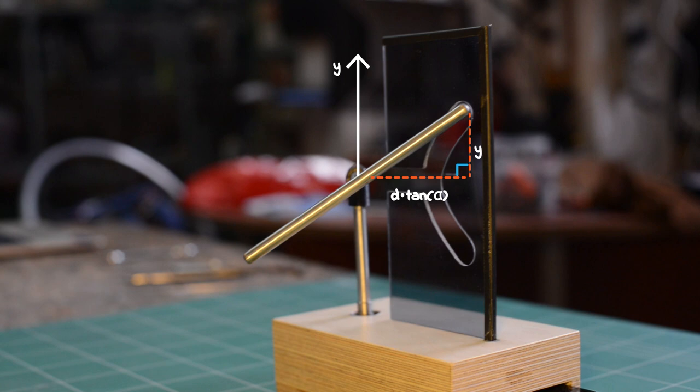At first glance, it seems that we don't have enough information to calculate it. We need additional information about this triangle. Luckily, we already have the top angle. It's equal to the rod's tilt angle, theta, because this leg and the rotation axis are parallel, and these are corresponding angles.